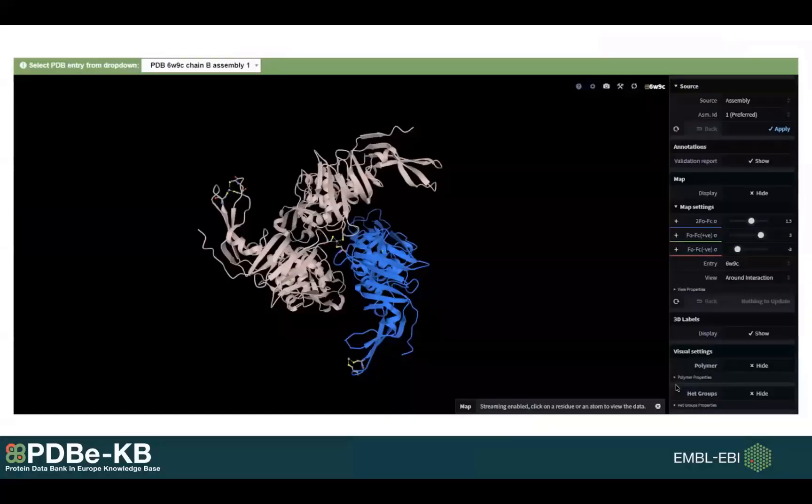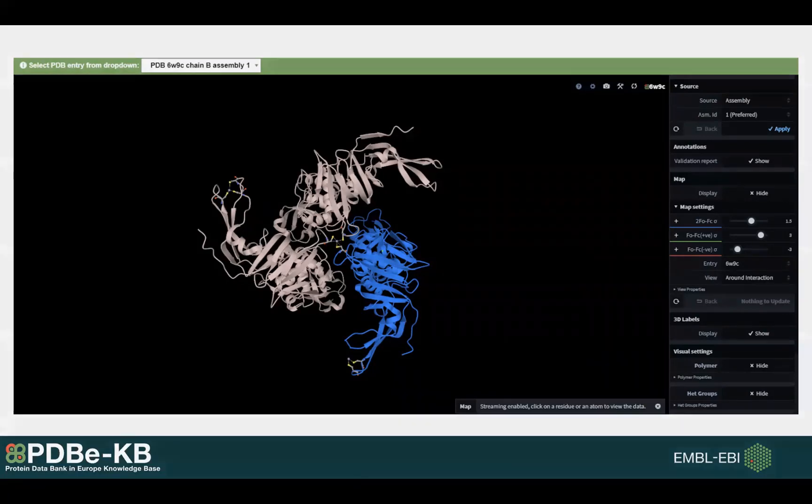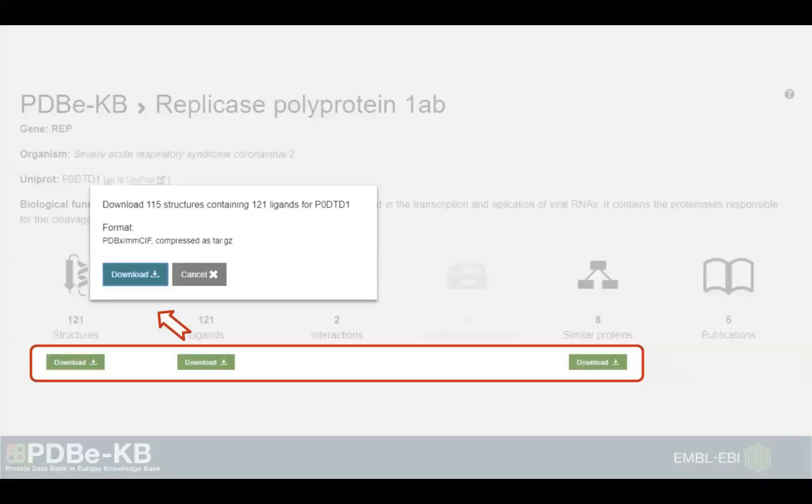If you click on any of these images, you get to an interactive 3D viewer called MolStar. You can also download all the coordinates for different options. For example, if you want to get all those PDB entries where there are small molecules, you can just click here and you will get 115 different PDB entries.